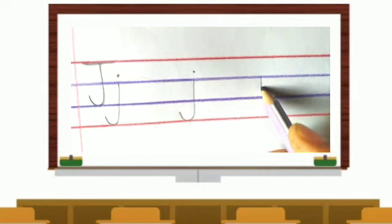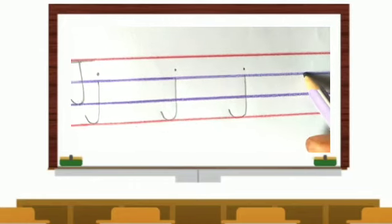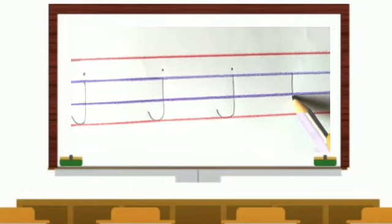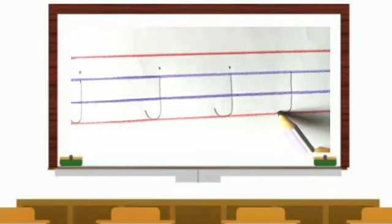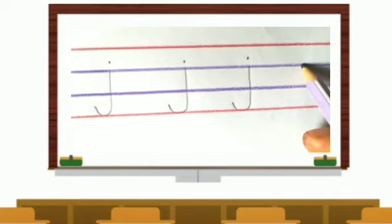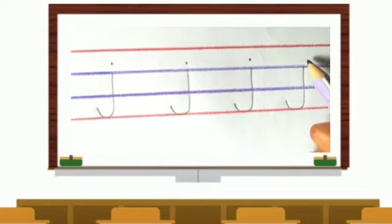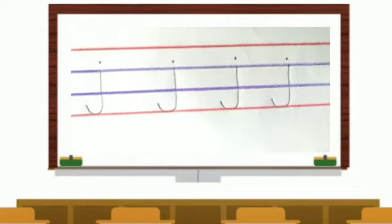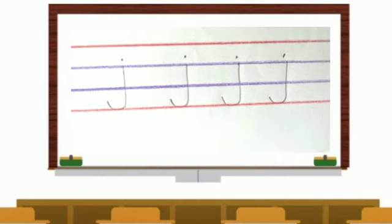From the blue line, come down to the red line, curve, and dot — letter J. From the blue line, slowly come down to the red line, go upward, and then dot — letter J. Begin from line number two down to line number four, make an upward curve, and dot. Write slowly and neatly.